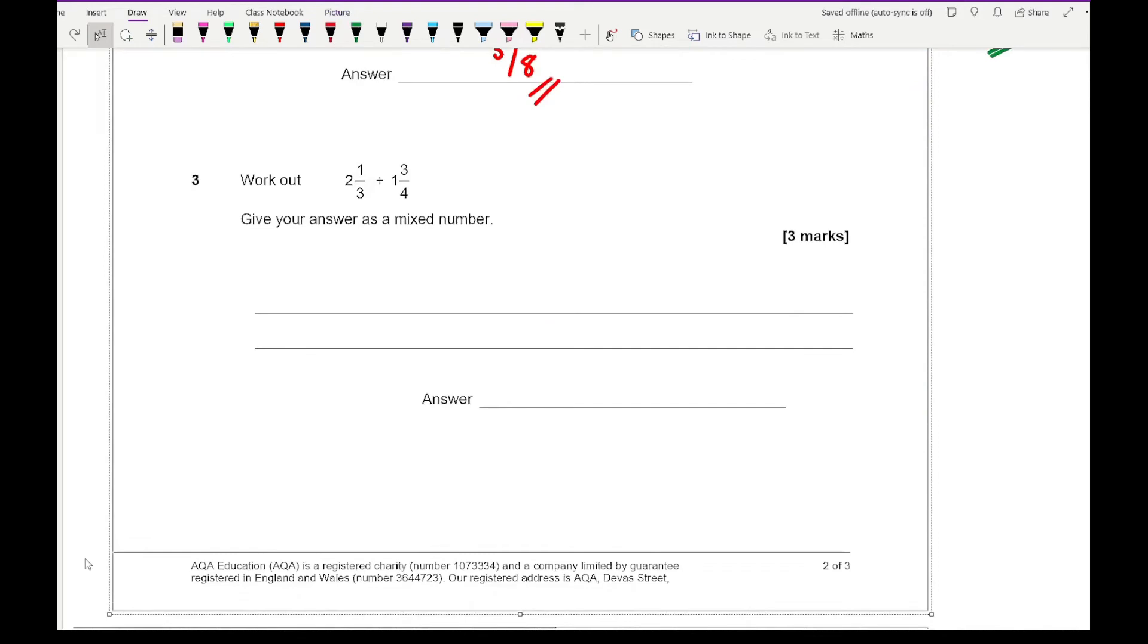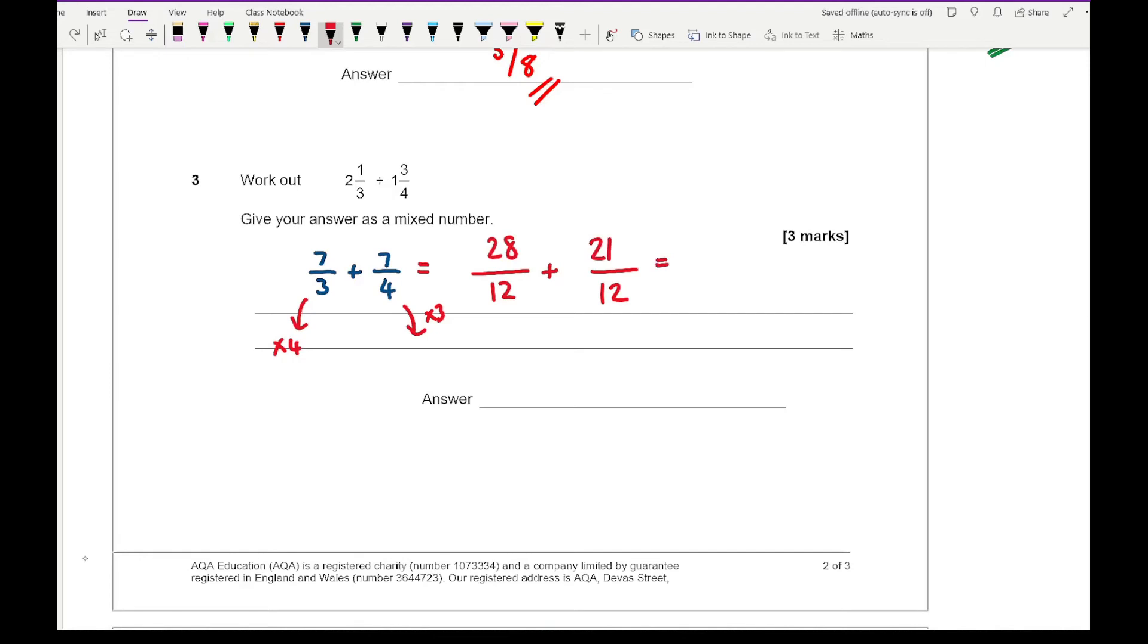Question three says work out 2 and 1/3 plus 1 and 3/4, give your answer as a mixed number. For three marks, I would convert both numbers into improper fractions. Do the big number times the bottom number, so that's 6 plus the top number, giving 7/3 plus 7/4. We need a common denominator, which is 12. Multiply this fraction by 4 and that fraction by 3, so 7 times 4 is 28. Seven times 3 is 21. Add the numerators to get 49 over 12.